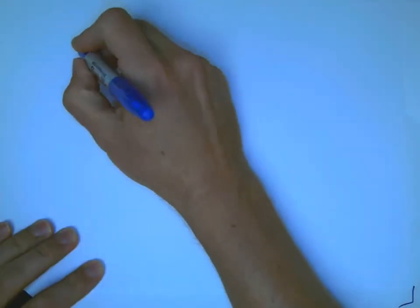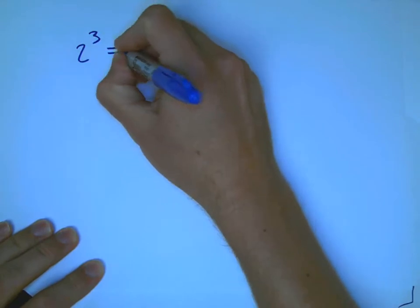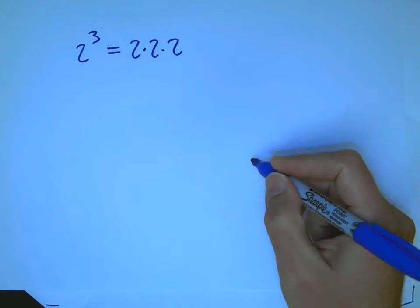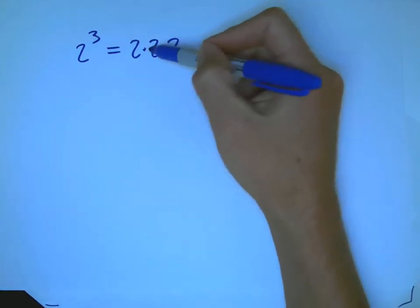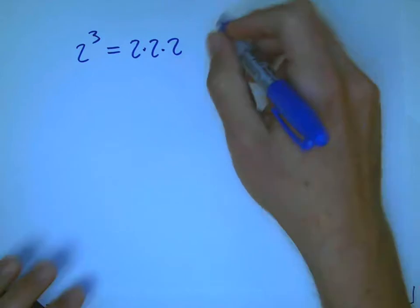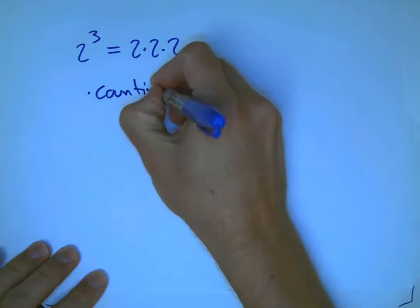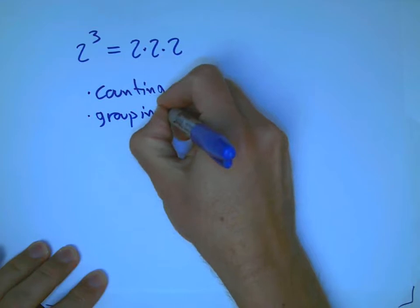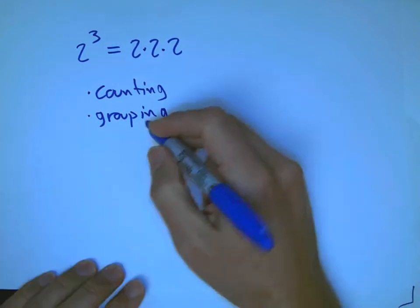What does it mean to take 2 to the third power? It's just a convenient abbreviation for multiplying 2 by itself 3 times — that 3 is about counting how many 2's there are. The rules of exponents are really all about two ideas: counting and grouping. That's really all there is to these rules of exponents.